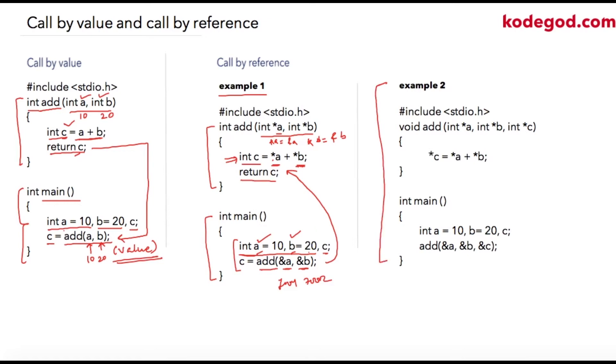Here I am defining a function to which three integer pointers are passed. Then I'm simply writing star c equal to star a plus star b. So what is happening over here let me explain you this in a bit.